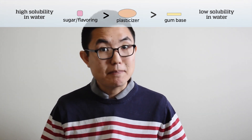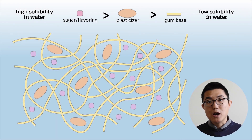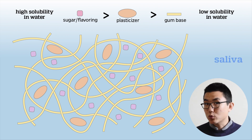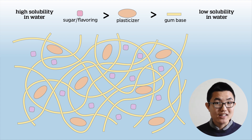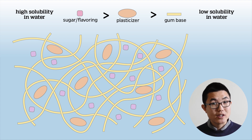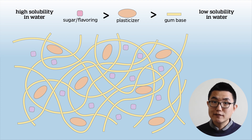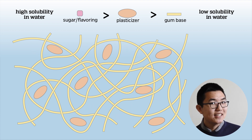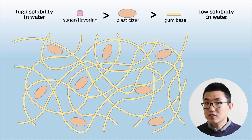Let's keep this ranking in mind and consider what happens when we start to chew gum. When we put the chewing gum in our mouths, the ingredients will first come into contact with the saliva, which is mainly water. The saliva will first dissolve the ingredients with the highest solubility — in this case the sugar and the flavoring molecules. As we chew, the gum will lose its flavor, because the sugar and flavorings get carried away with our saliva. Even after the flavor goes away, the gum still retains its chewy texture, because the gum base and the plasticizer are still undissolved.